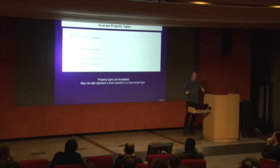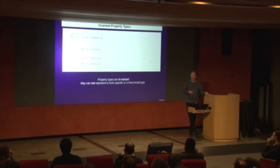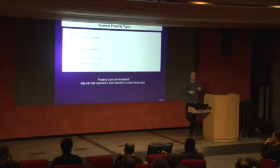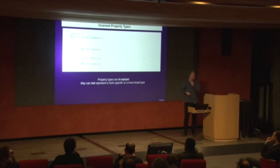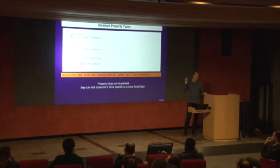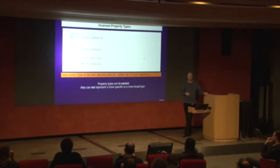Then there's the third one, which is invariant property types. Because properties are both read and write, you can't make the type wider in an inherited class, because depending on where you're reading and writing, your original calling code might not know how to deal with the type. So properties are invariant — they cannot represent a more specific or a broader type. When you try to do that you get a fatal error, not an exception — why this is I don't quite know.